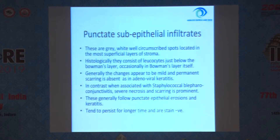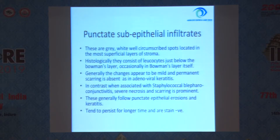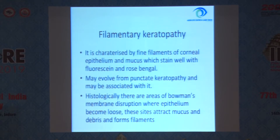Punctate subepithelial infiltrates are grey-white well-circumscribed spots located in more superficial layers of stroma — that means they are deeper compared to other lesions. Histologically, they consist of leukocytes just below the Bowman's layer, occasionally in Bowman's layer itself. Generally, the changes appear to be mild and permanent scarring is absent, as seen in adenoviral keratitis. But sometimes, when associated with staphylococcal blepharoconjunctivitis, severe necrosis and scarring is prominent. These generally follow punctate epithelial erosions and keratitis and tend to persist for a longer time and are stain negative.